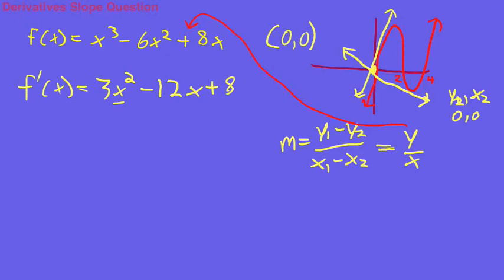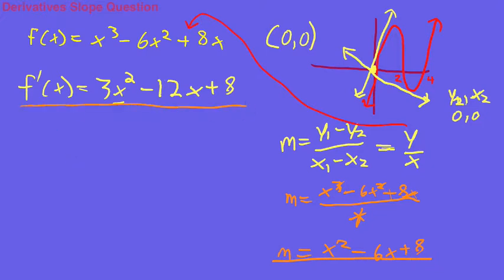Well we actually have y in terms of x - that is our original function. So let's plug that into our slope equation. This gives us (x³ - 6x² + 8x)/x. Now if we cancel this stuff out, that's going to equal x² - 6x + 8, and that's an equation for the slope.